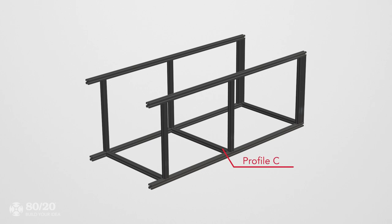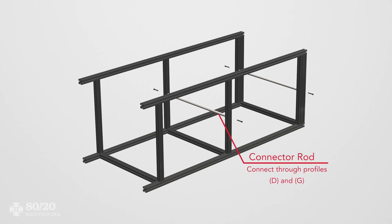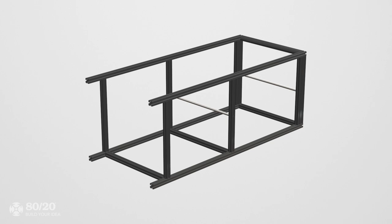Next we'll lay down the two sections and connect them with three C profiles using end fasteners. Then attach the connector rods using bolts. Then we'll install the last cross post at the top using profile F and single tab end fasteners.